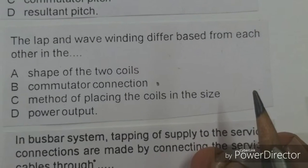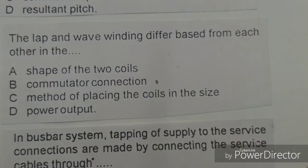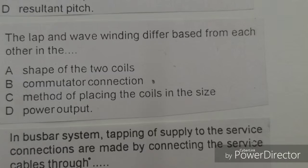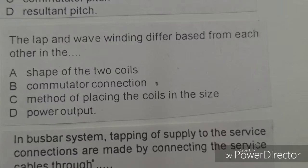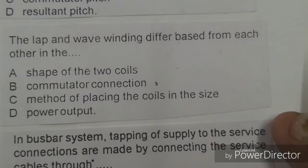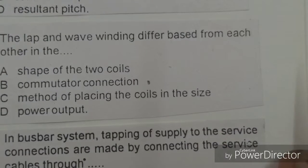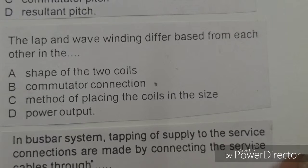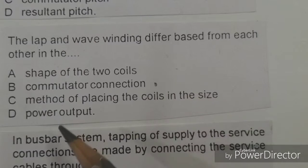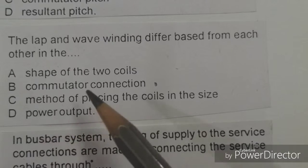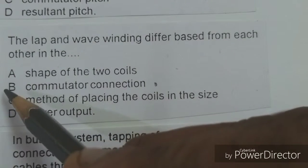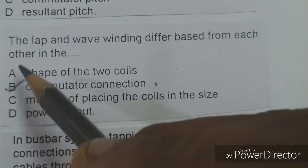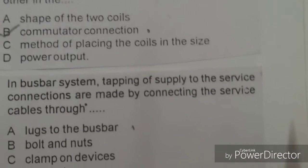Next objective: The lap winding and wave winding differ from each other in. Options given: shape of the two coils, commutator connection, method of placing the coil sides, power output. The right answer is B, commutator connection.